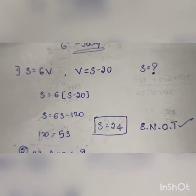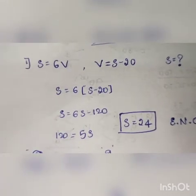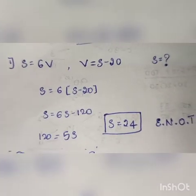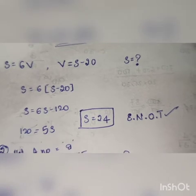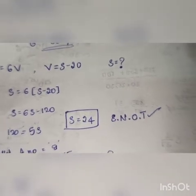6S minus S equals 120, so 5S equals 120. S equals 120 divided by 5, which is 24. But this option is not available, so answer E, none of these, is right.